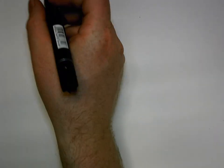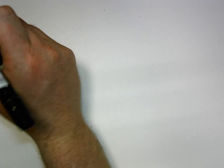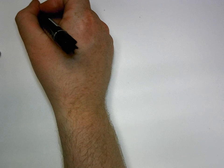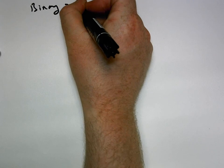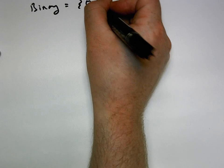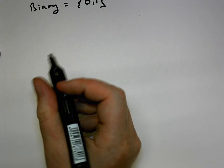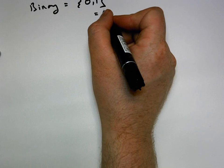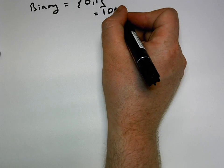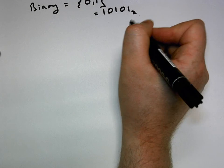Hello class, back again with some more fantastic numbers. So last time we did decimal to binary and binary back to decimal. So the binary number system, when we think about that, has an alphabet. The alphabet consists of zeros and ones. A valid binary number is just any number that consists of zeros and ones and is base two.